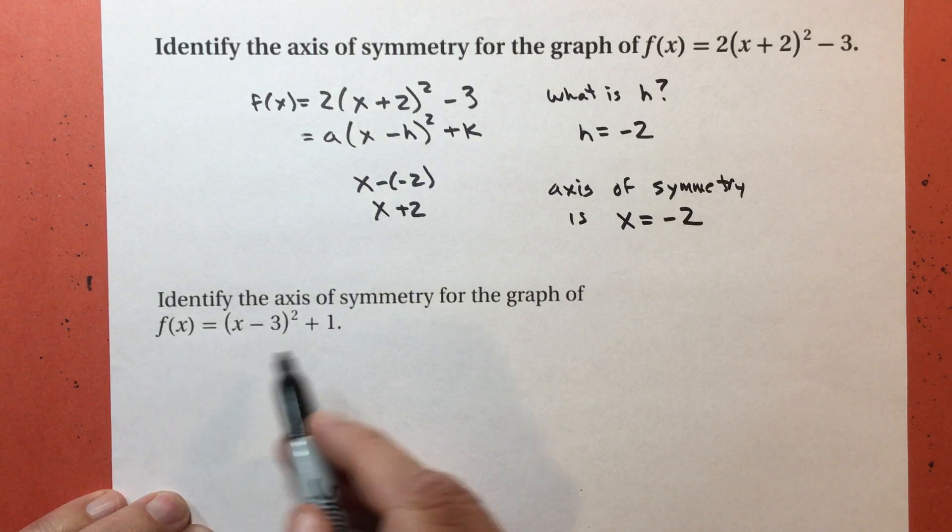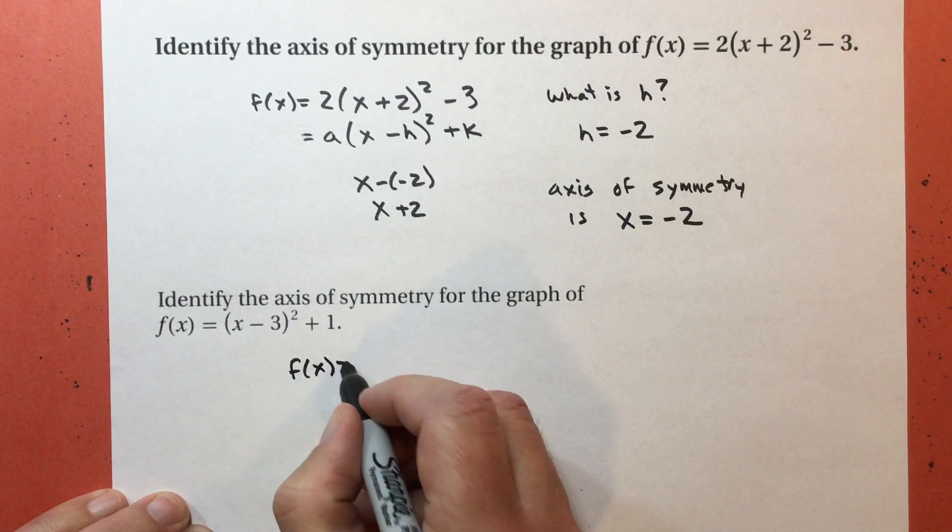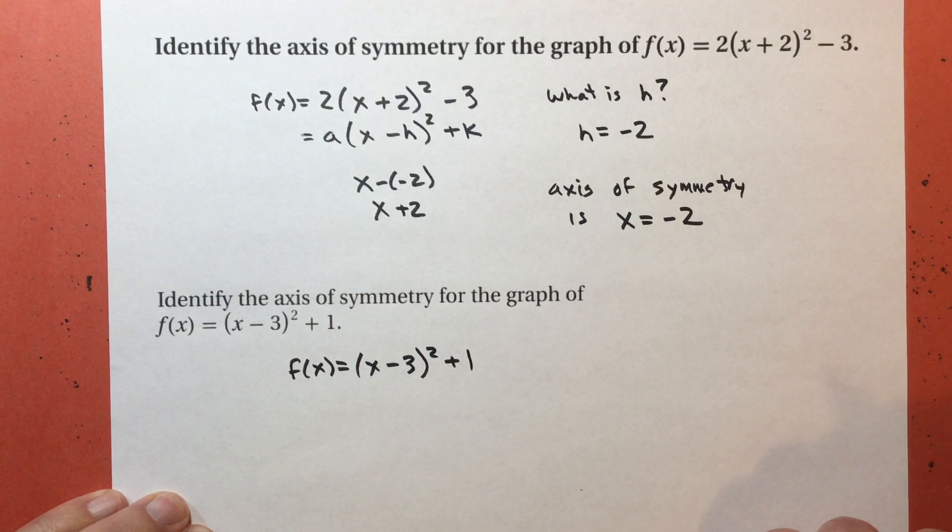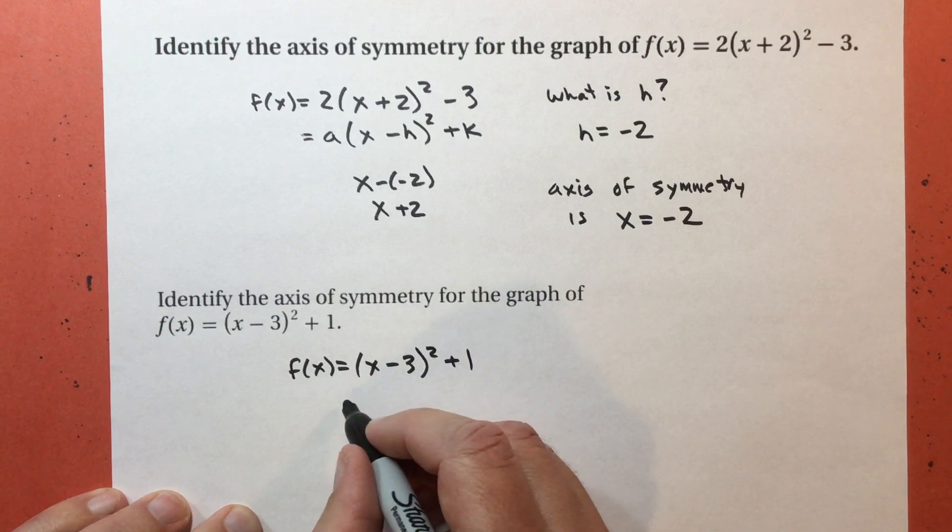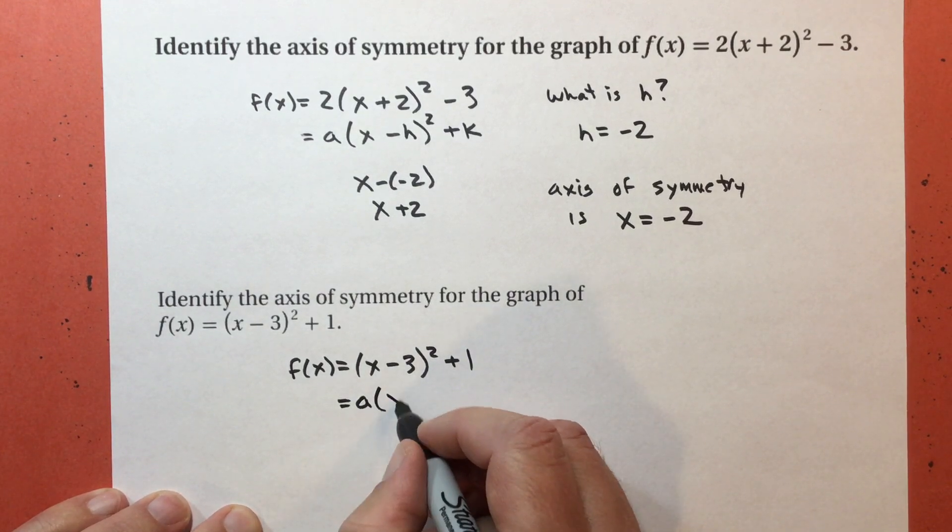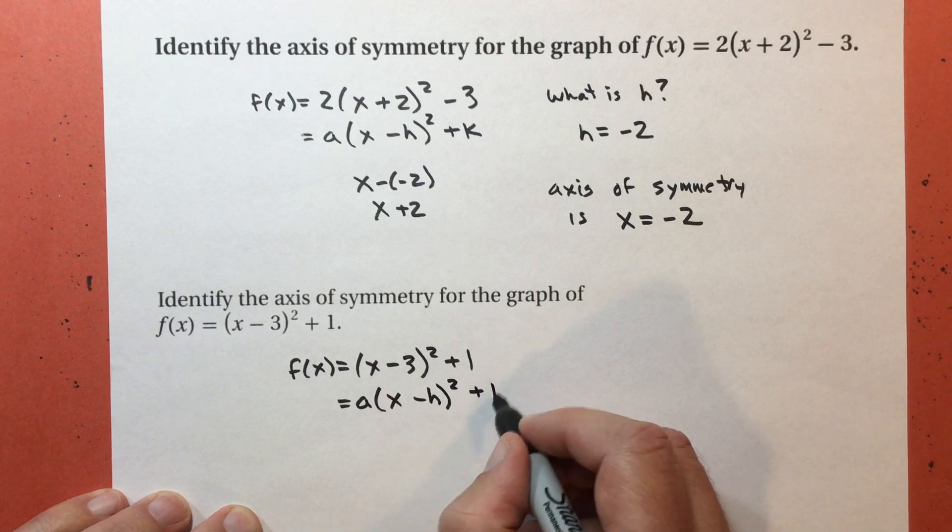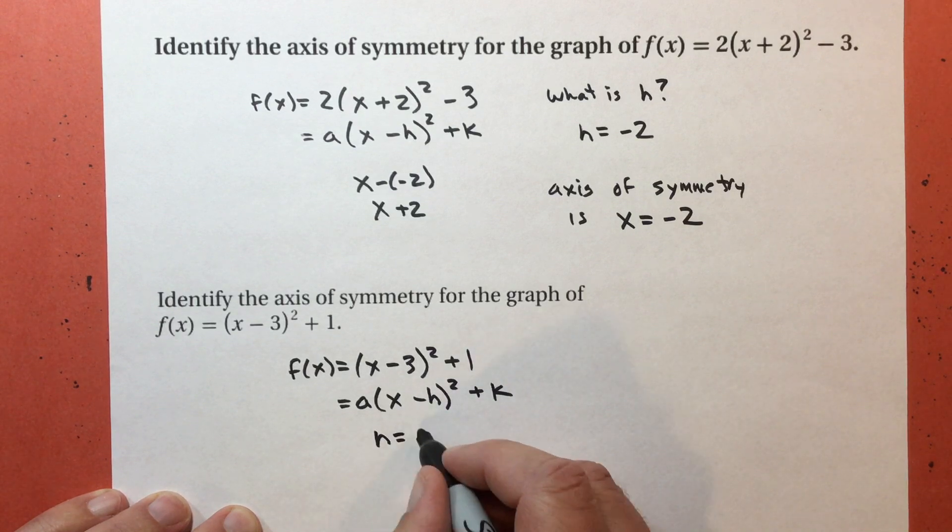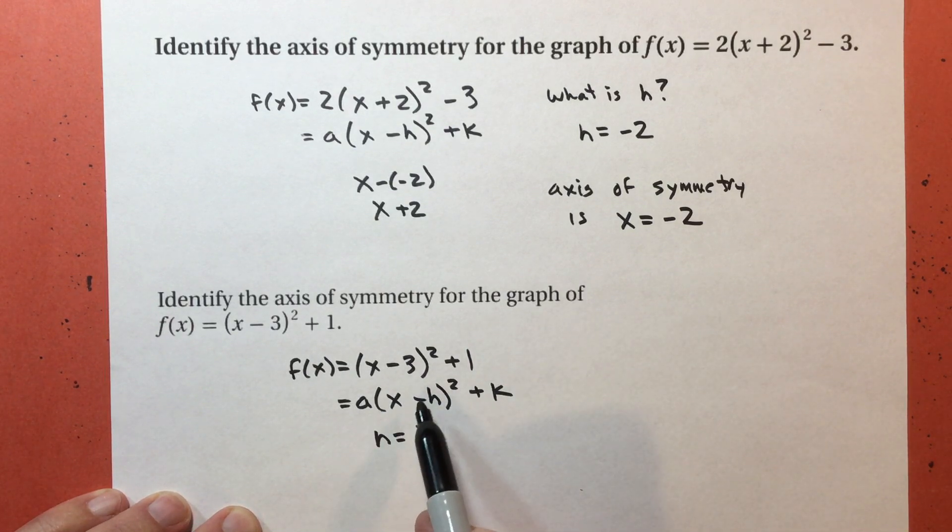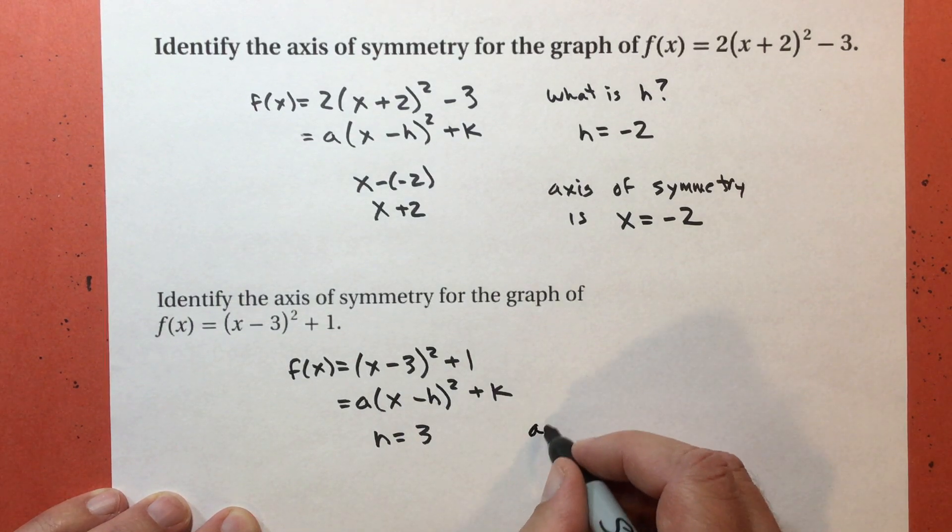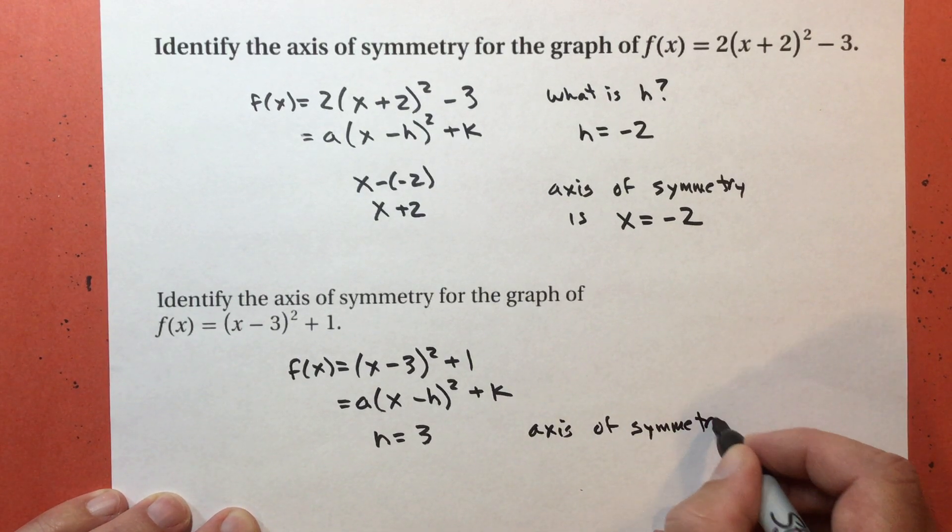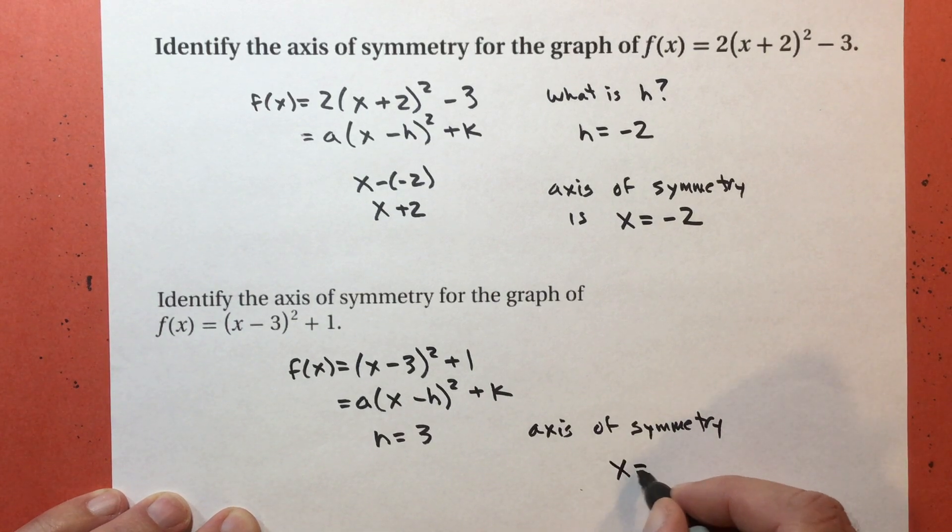For this one, I have f(x) = (x - 3)² + 1. Again, what's my h? In vertex form, it's a(x - h)² + k. My a is 1, my k is 1, but my h is positive 3. I'm subtracting 3. I want to be subtracting h. That tells me h is 3. So my axis of symmetry is x = 3.